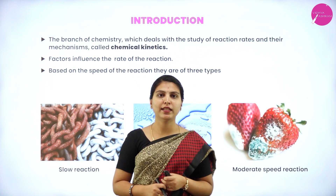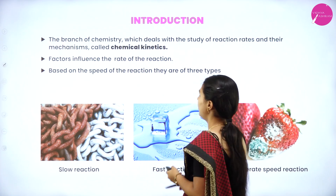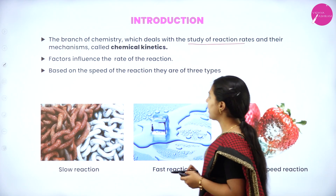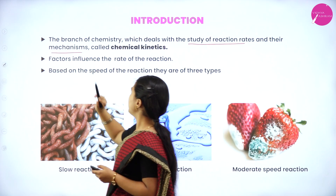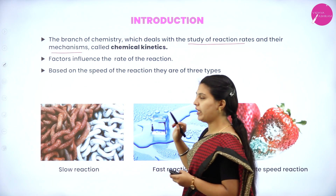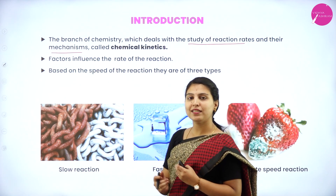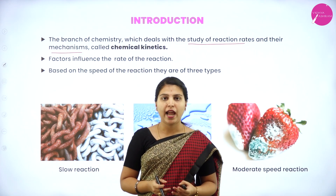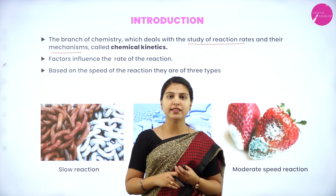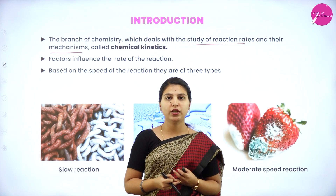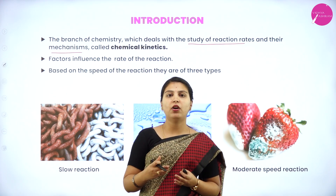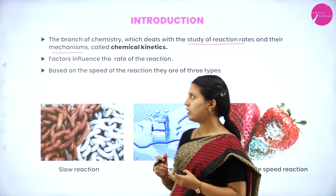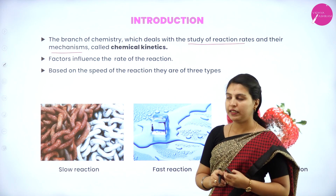First, what is chemical kinetics? The branch of chemistry which deals with the study of reaction rate and their mechanisms is called chemical kinetics. Chemical kinetics is a branch of chemistry which deals with reaction rates, factors affecting the reaction rates, and mechanisms of the reactions — essentially complete knowledge of chemical reactions.